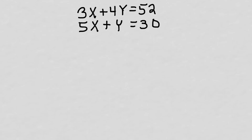Here's our third problem. I've got 3x plus 4y equals 52 and 5x plus y equals 30. You'll probably need a calculator to work through this because we'll be working with some higher numbers, but the steps and procedures are still the same. Looking at these, nothing eliminates: 3x plus 5x gives me 8x, 4y plus y gives me 5y. I'm going to have to modify one of these equations to make elimination work.